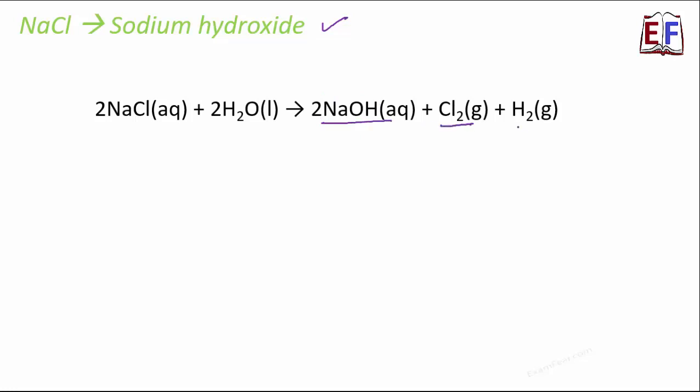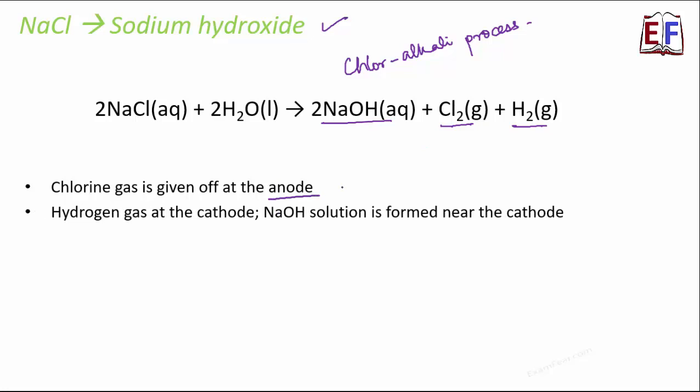Along with that, chlorine and hydrogen gases are released. This process is often termed as chloralkali process. Why? Because during this process, chlorine and alkali, that is NaOH, are produced or they are formed. When you look at this entire process of electrolysis, you see that chlorine gas is given off at the anode, whereas hydrogen gas is given off at the cathode, and NaOH solution is also formed near the cathode. That's how we get sodium hydroxide from NaCl.